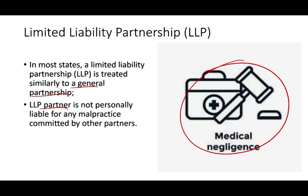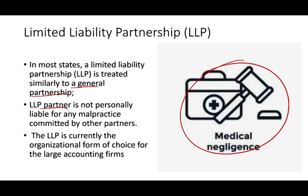For example, if you're talking about a doctor's practice with five doctors and one individual commits malpractice, the other four are not responsible. This is why doctors, lawyers, and accountants form LLPs — each partner is responsible for their own malpractice only. An LLP is currently the organizational form of choice for most large accounting firms, including the Big Four.